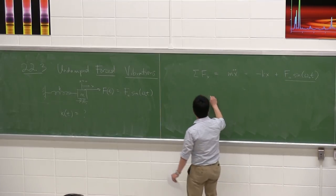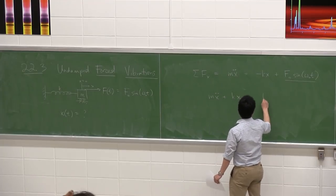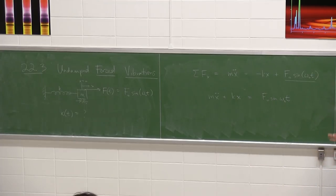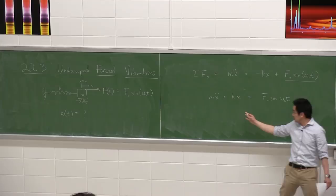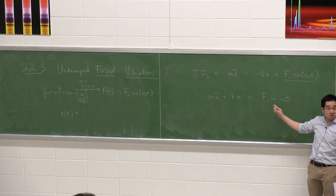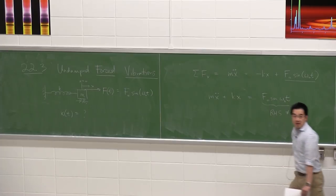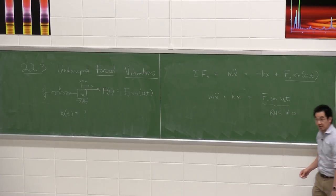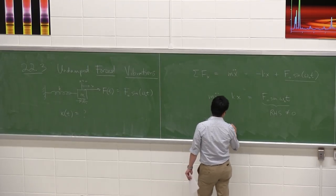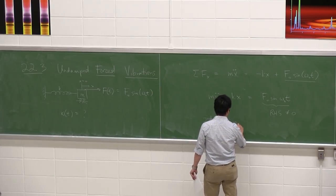Rearranging, we get a new ordinary differential equation. The left-hand side looks exactly the same — still x double-dot and x, with m and k. The only change is the right-hand side. When we have something non-zero on the right-hand side, this becomes a second-order ODE that is called non-homogeneous.